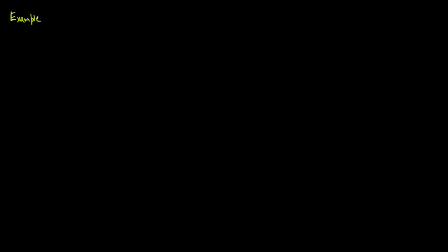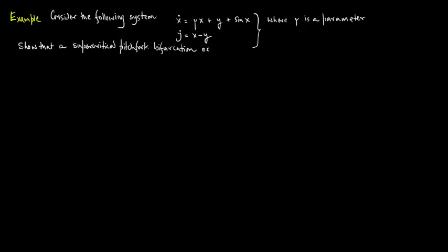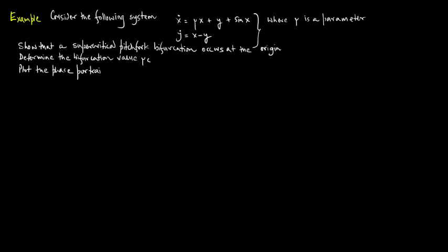Let us look at an example. Consider the following system: x-dot equals mu*x plus y plus sin(x), and y-dot equals x minus y, where mu is a model parameter. Show that a supercritical pitchfork bifurcation occurs at the origin, determine the bifurcation value mu-critical, and plot the phase portrait near the origin for mu slightly greater than mu-critical.